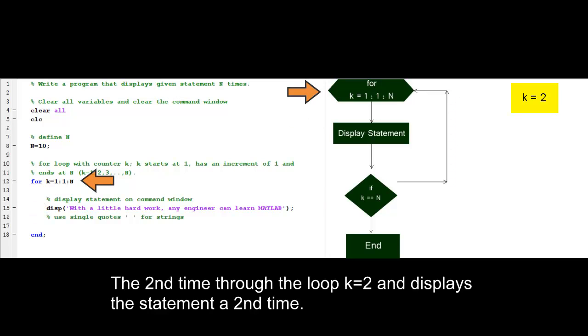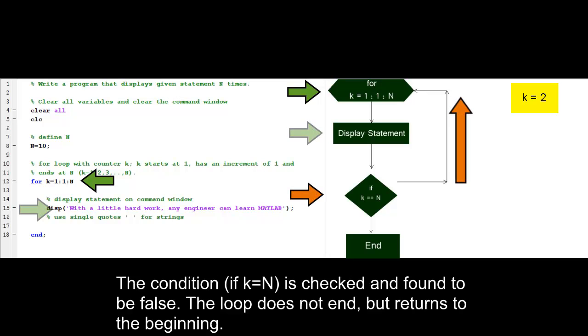The second time through the loop, k equals 2, and displays a statement a second time. The condition if k equals n is checked and found to be false. The loop does not end, but returns to the beginning.